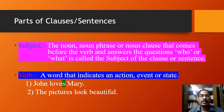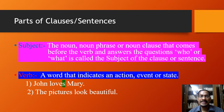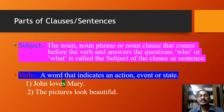The word verb is a word that indicates an action, event, or state. It occurs after the subject and indicates the main action in the sentence. Here are two examples.